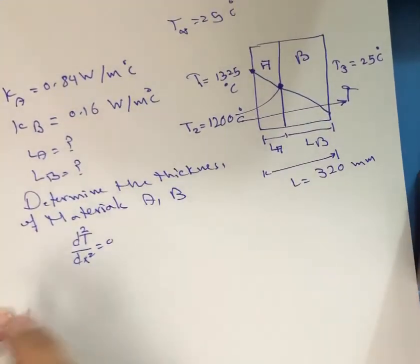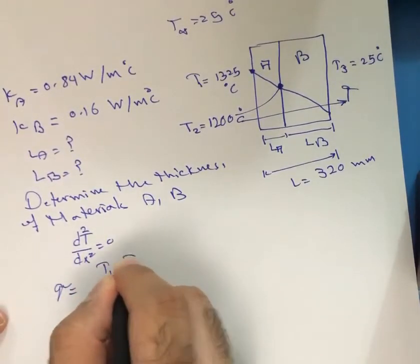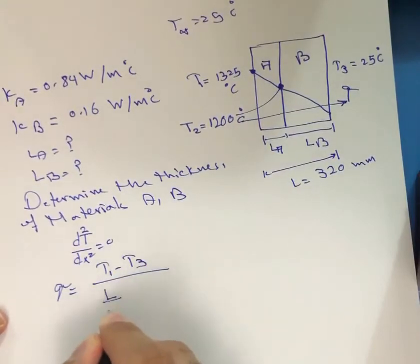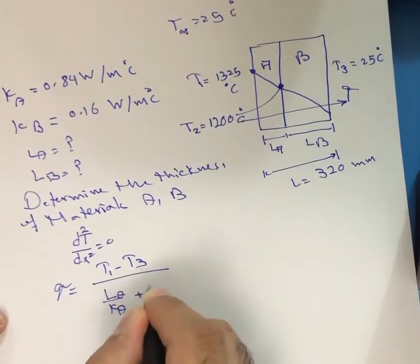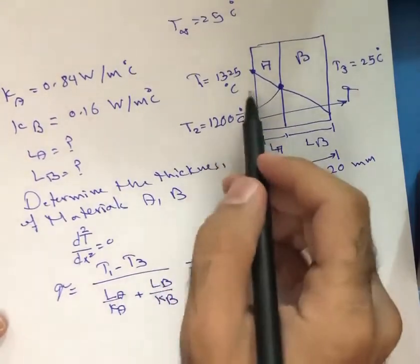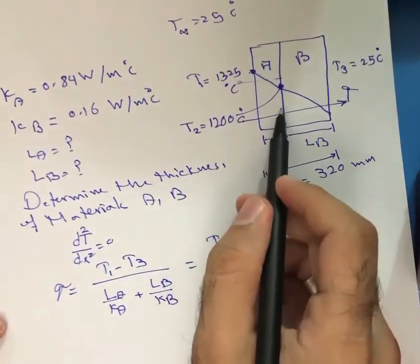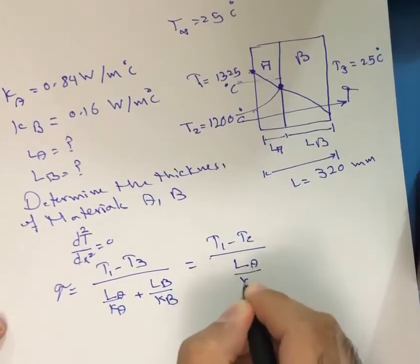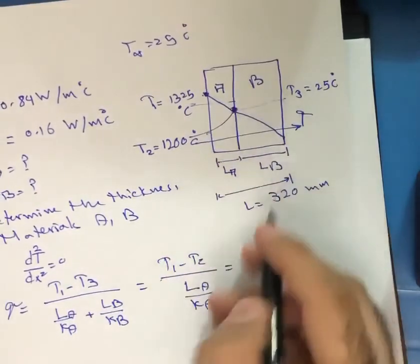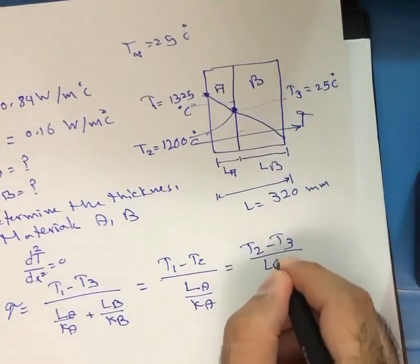Heat flows from high temperature to lower temperature and remains constant. Per unit area, the heat flux q equals (T1 minus T3) divided by (L_A divided by k_A plus L_B divided by k_B). This also equals the heat transfer through wall A, which is (T1 minus T2) divided by (L_A over k_A), and equals the heat transfer through wall B, which is (T2 minus T3) divided by (L_B over k_B).